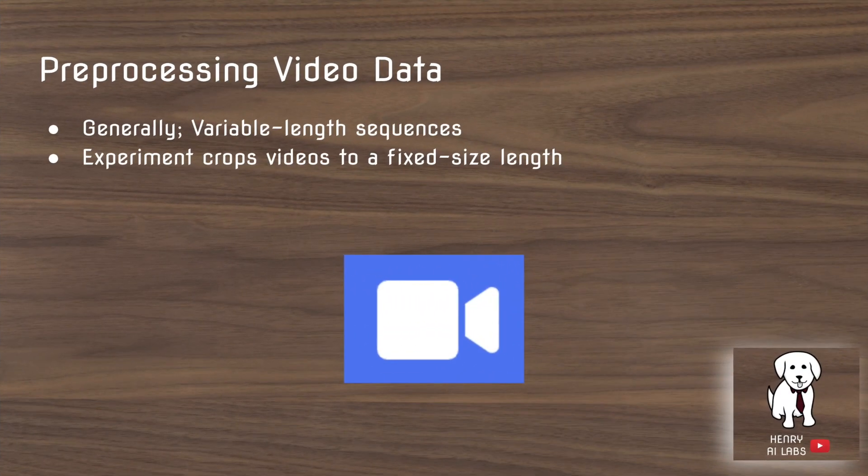They preprocess the video data by cropping them to a fixed size length. This is problematic because in sequence learning, you want to be able to deal with variable length sequences. For example, you want to be able to classify a 30-second video with the same ability as you classify a 45-second video.